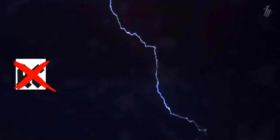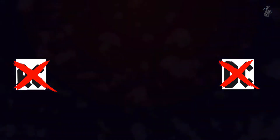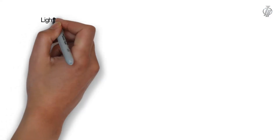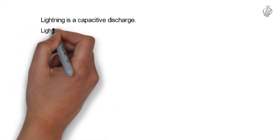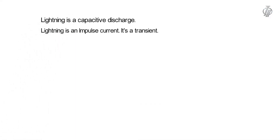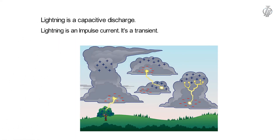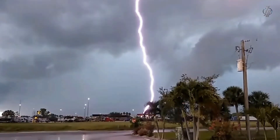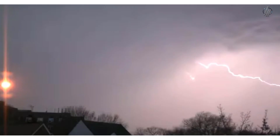So lightning is neither AC nor DC. Then what is lightning? Lightning is a capacitive discharge. Lightning is also called impulse current. Lightning is like a short circuit between cloud and ground, or cloud to cloud — a momentary DC-like discharge.